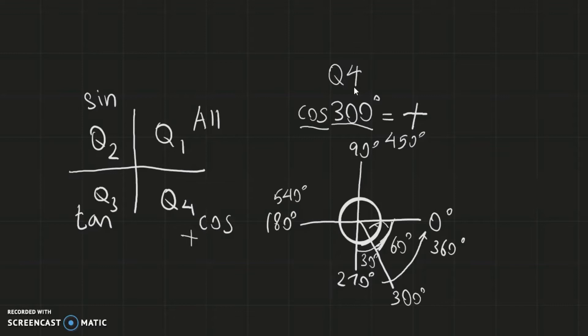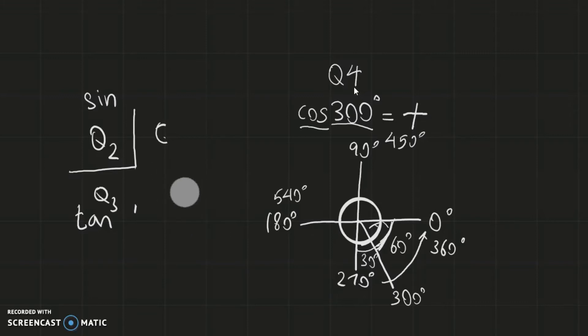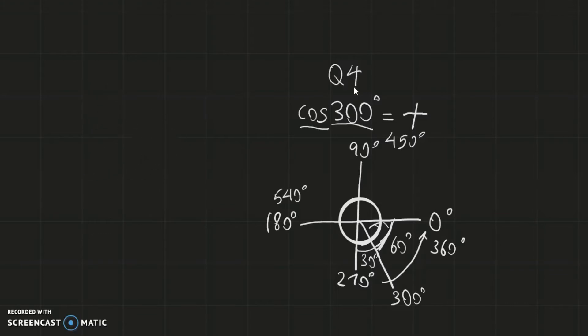Now, if we go one step further and actually calculate the answer, the most obvious approach would be to punch it into a calculator, but that's not what we want to learn. Fundamentally, when we apply the system of quadrants, the process is quite elementary. Since we've identified this is in quadrant 4 and the answer will be positive, let's map it out.